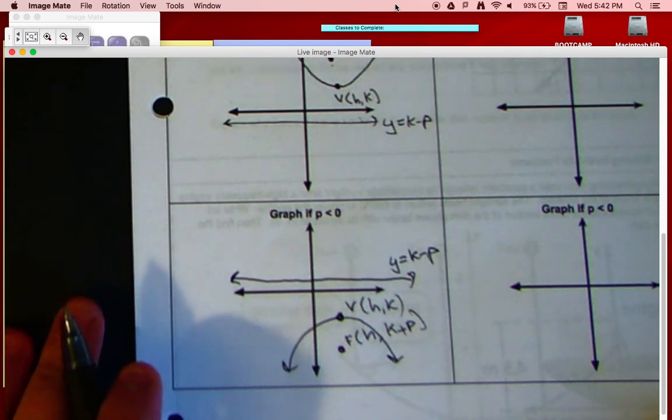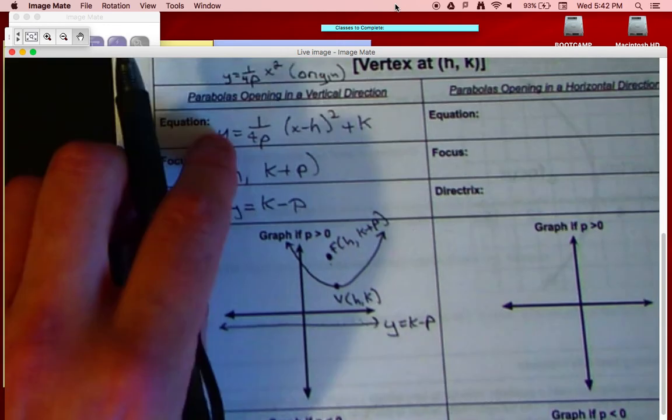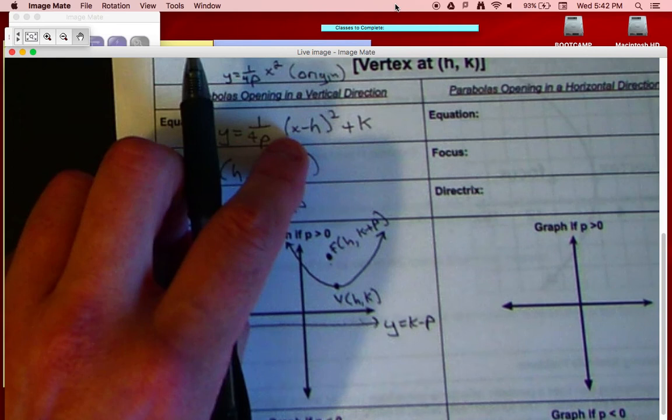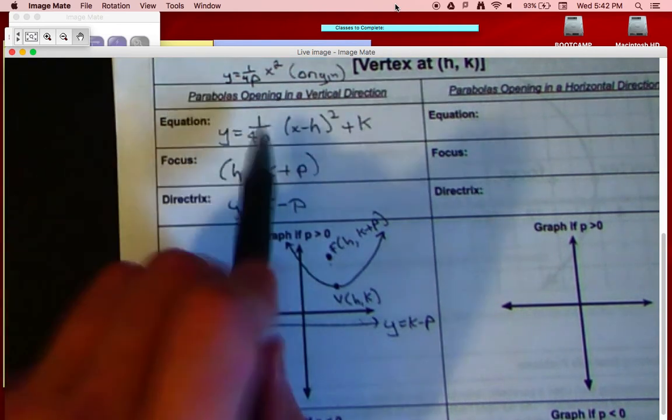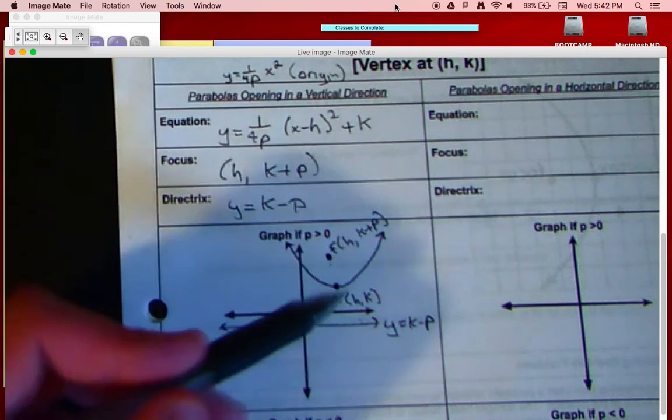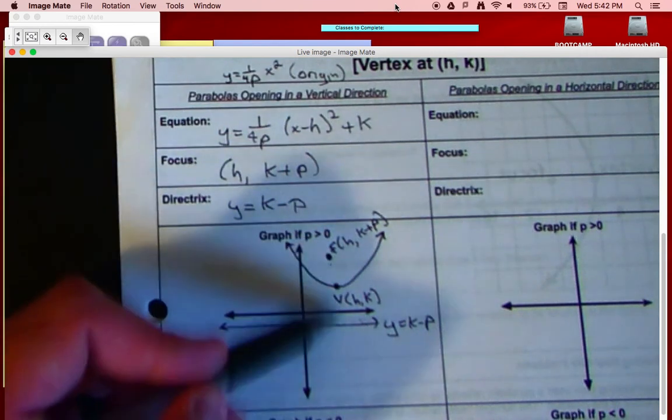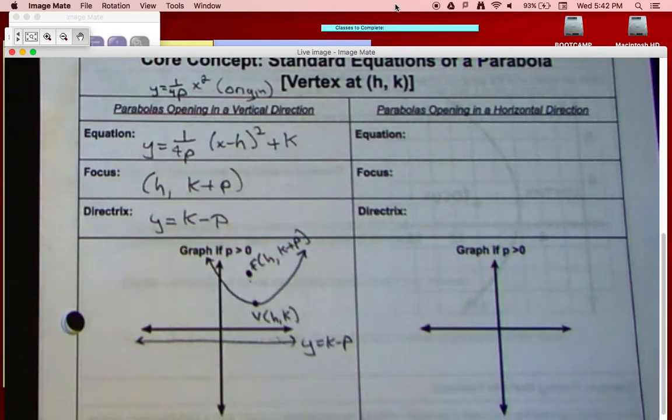Alright, so that's if it opens up or down. Key thing is, if it opens up or down, it's got this form right here, y equals something, okay? Once we figure out what all these numbers are, particularly we find the p value and the vertex, we can just do our counting to find everything else. Alright, so that's vertical. Let's look at horizontal.